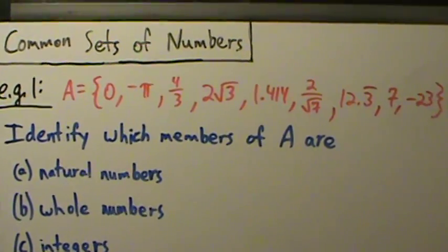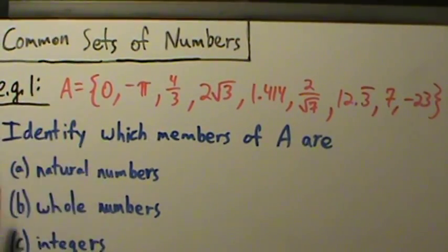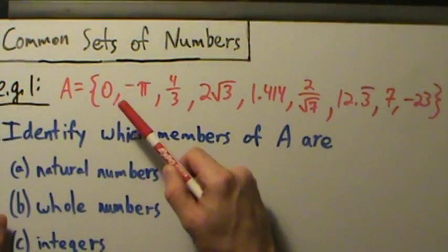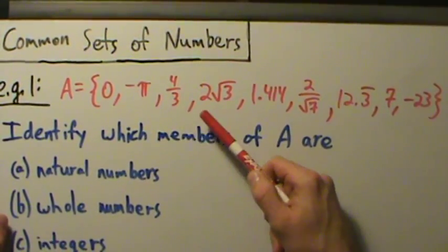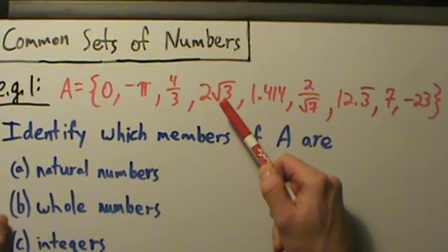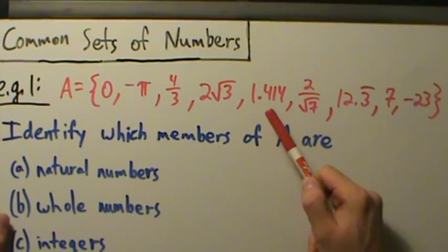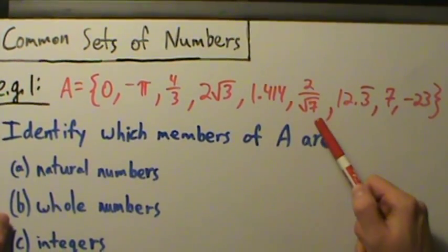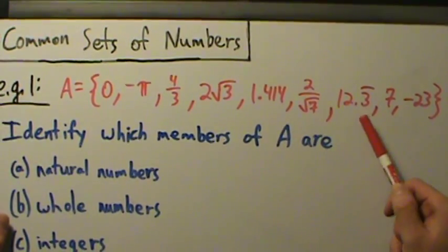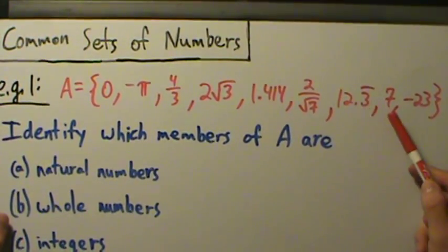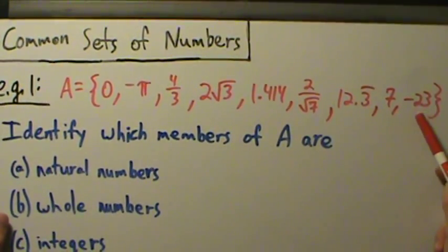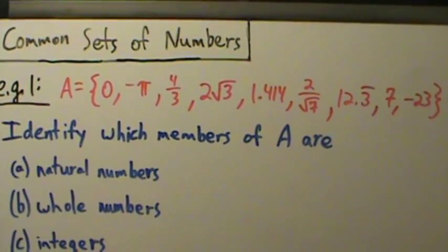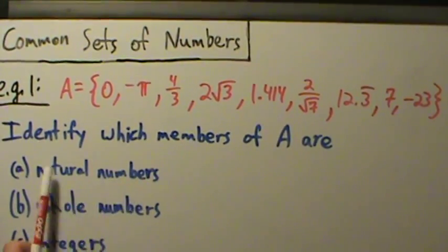So example one, here's the set A: zero, negative pi, four-thirds, two times the square root of three, 1.414, two divided by root seven, 12 point repeating three, seven, and negative 23. Okay, so now we want to identify which members of A are our natural numbers. Let's do that first.